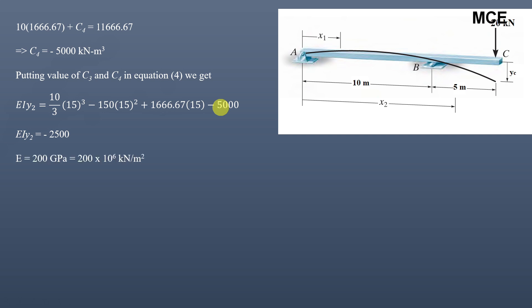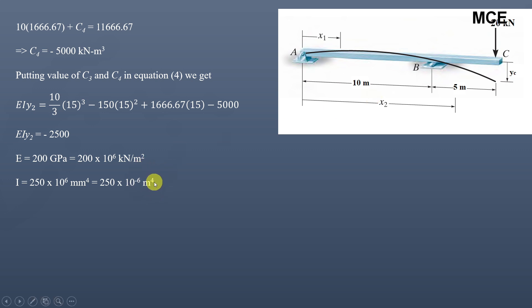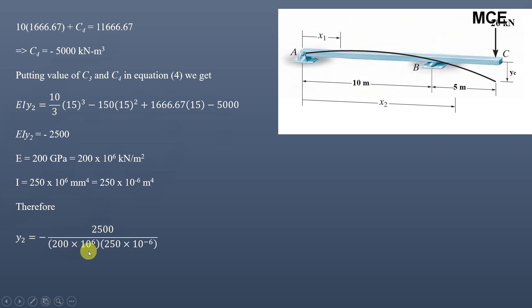The modulus of elasticity E = 200 GPa = 200 × 10⁶ kN/m², and the moment of inertia I = 250 × 10⁶ mm⁴ = 250 × 10⁻⁶ m⁴. Substituting these values: y2 = −2500 / (200 × 10⁶ × 250 × 10⁻⁶), which equals −0.05 m.